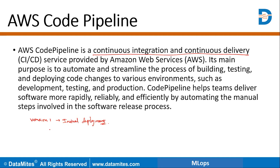After that I made some changes — some advancement in my code — and then I'm going to create a new version, that is my version two. Once I created the new code and made changes in my code environment, it will be automatically followed by the CodePipeline. It will use the new code to train and deploy the model. This is my second version.